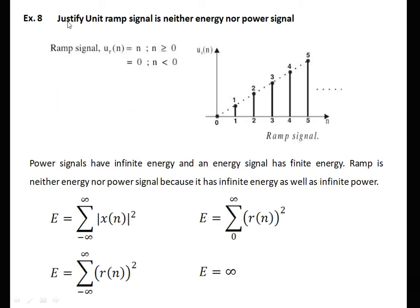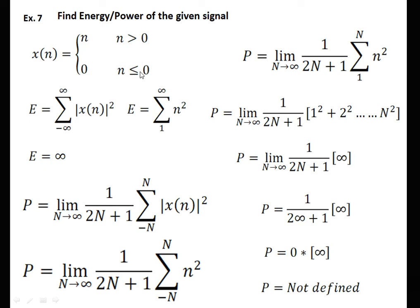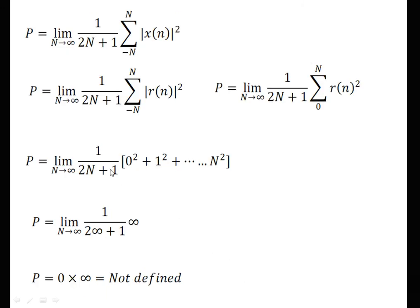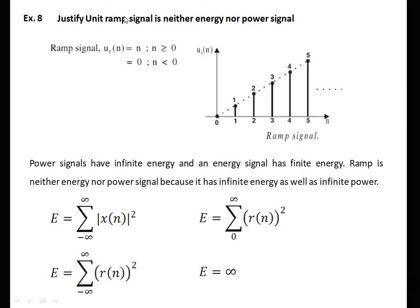In exams, the question may come as: Justify that the unit ramp signal is neither an energy nor a power signal. The definition of the previous problem and this are very similar — it is only that the condition is n ≤ 0 instead of n < 0, but the signal represents the same ramp. It is linearly increasing, so when we calculate energy we get infinity, and when we calculate power we also get infinity. The limit change is only from 0 to N instead of 1 to N; otherwise the answer is the same.